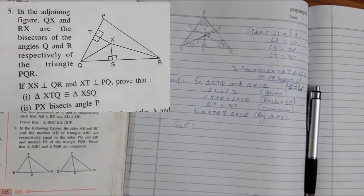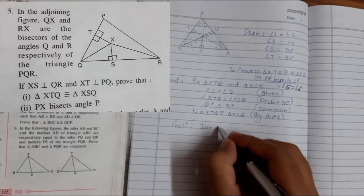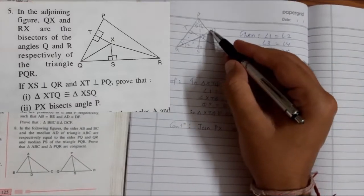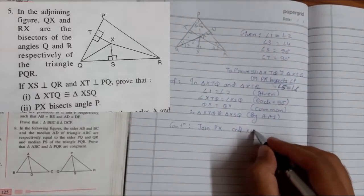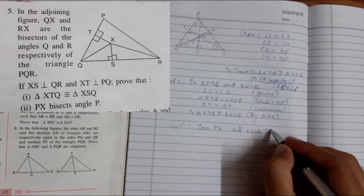So we need to write construction over here. We have done two constructions. One is joining PX. Join PX. And another is joining XU perpendicular to PR. Clear?